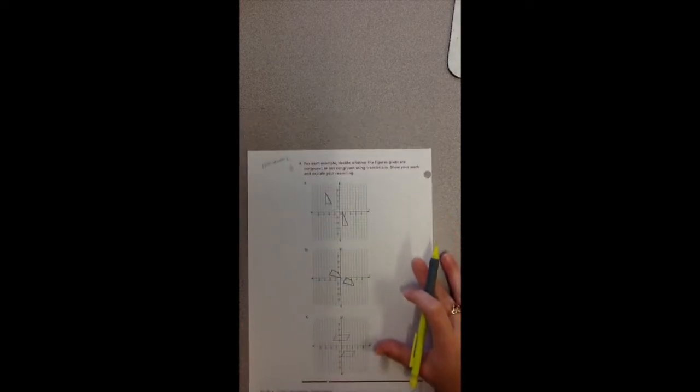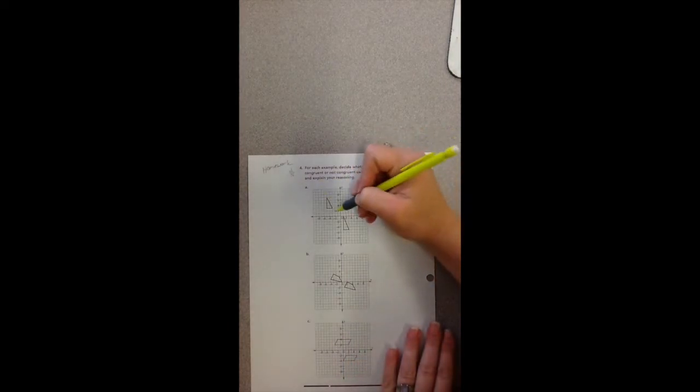So you can kind of just look at the units and the shape of it. Either one will work. The reason they're wanting you to kind of show what translation happened is to show specifically how each point moved. So let's take a look at A. If I'm thinking that this point here need to move to this point here, then it had to go to the right.